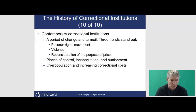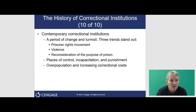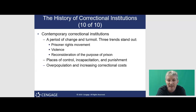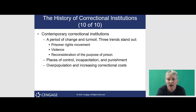Prison violence increased. Some of this was due to overcrowding and poor conditions. The locus of control in many prisons shifted from correction staff to violent inmate gangs. From the 1960s to the 1980s, most prison administrators adopted the medical model, which viewed inmates as sick people who needed treatment rather than punishment. Eventually, disenchantment over the effectiveness of rehabilitation led prison officials to change their focus from rehabilitation to incapacitation, and the pressure caused by overpopulation began to become a burden.